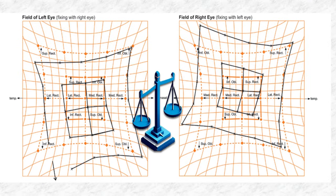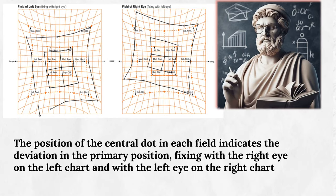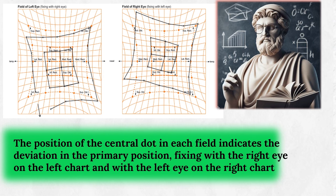Looking at these two charts, the right eye chart seems to be at a higher level compared to the left eye chart. This means the right eye is actually hypertropic and the left eye is hypotropic, at a lower level. The position of the central dot in each field is very important — it indicates the deviation in the primary position for that eye. In the left eye field, when the right eye is fixing, the central dot is displaced down, indicating hypertropia, whereas the right eye field charted with the left eye fixing is also hypertropic.